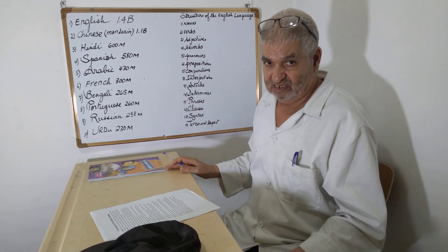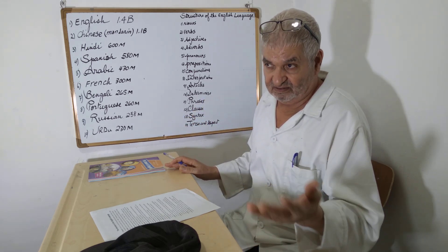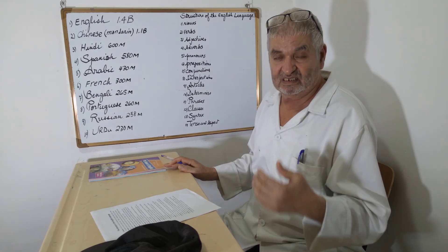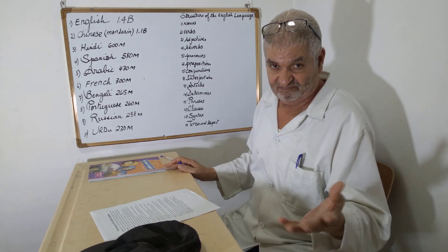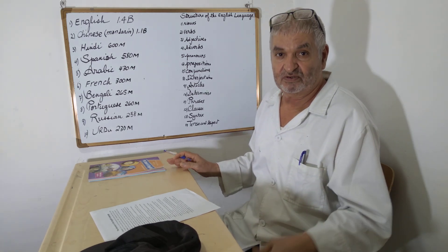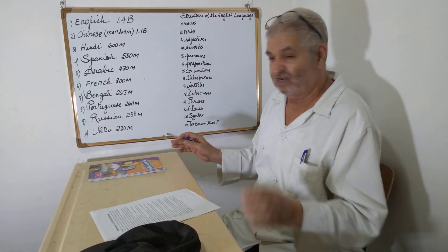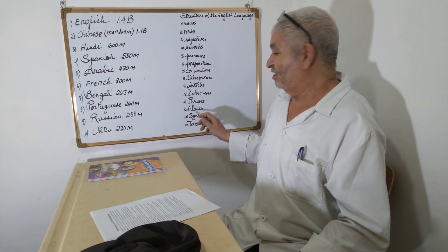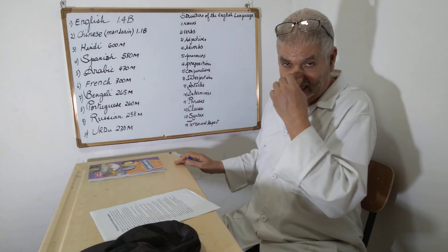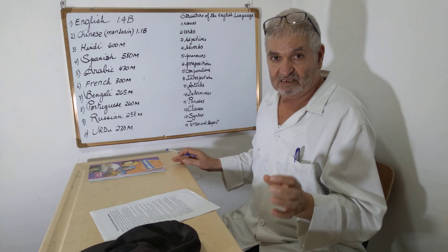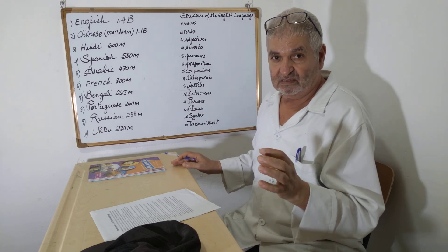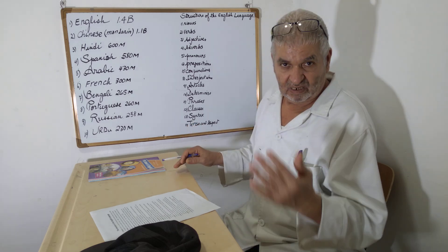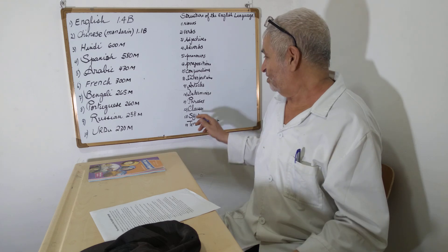Then there are phrases: noun phrases, verb phrases, and prepositional phrases — phrases are just a few words together. And you have clauses — these are statements, small ones; some of them are complete, some are not, and they can be dependent or independent.